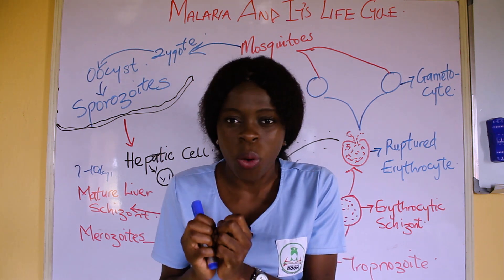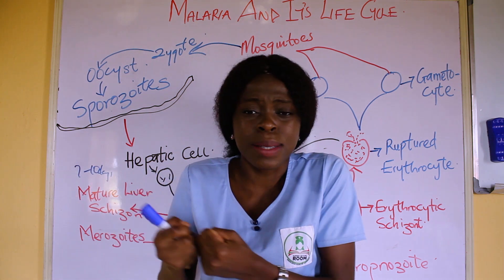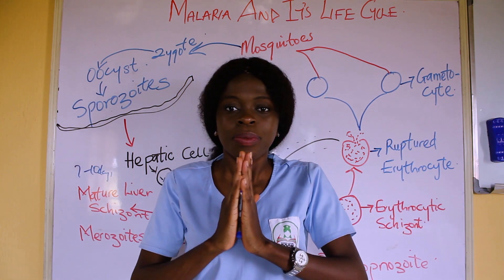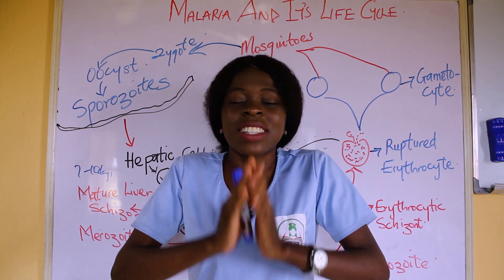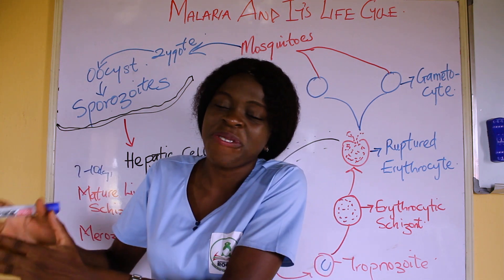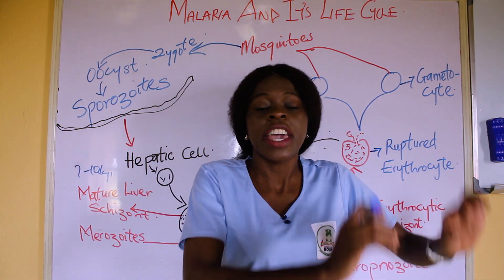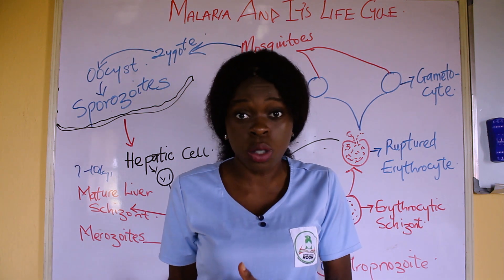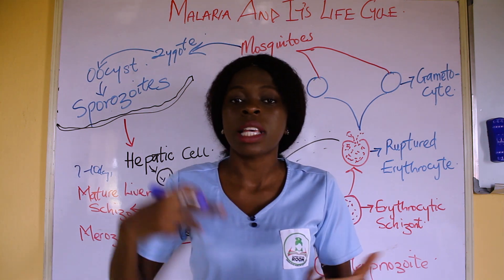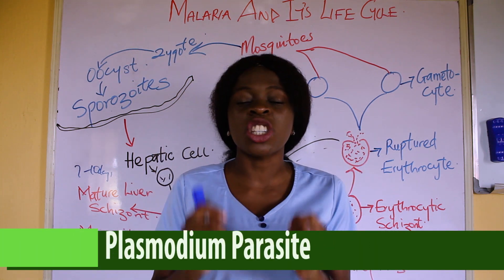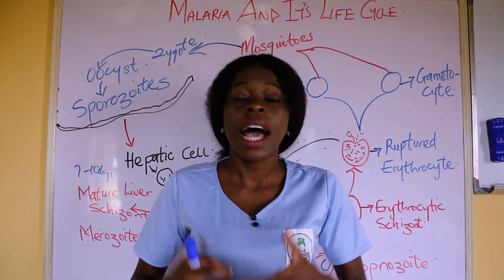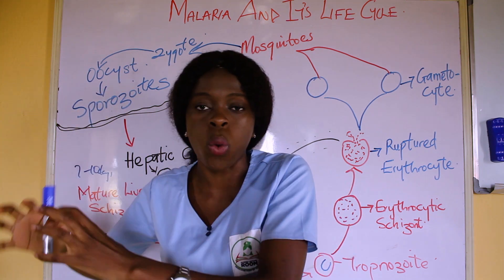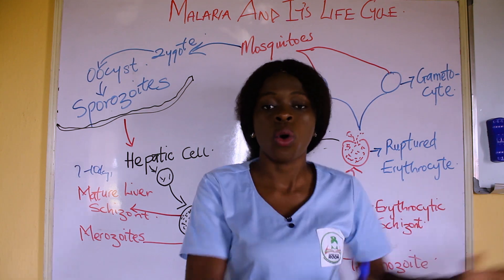Mosquito acts as a vector that transfers or transmits this plasmodium from one infected host to another. Mosquito is like a middleman that transfers what causes malaria from an infected host to a host that is not infected. So whenever you are asked what is the cause of malaria, don't say mosquitoes — it is caused by a plasmodium parasite. The mosquito is just acting as a vector, helping to transmit that plasmodium from an infected host to a non-infected host.